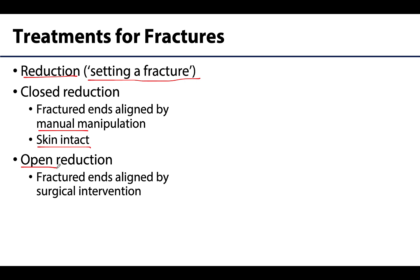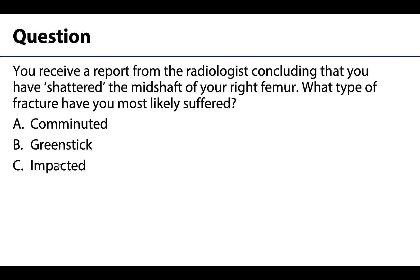That was a lot of fracture content — let's work through a question together. You receive a report from the radiologist concluding that you have a shattered midshaft of your right femur. What type of fracture have you most likely suffered? Is it A) comminuted, B) greenstick, or C) impacted? The main clue in this question is the word 'shattered,' and hopefully that leads you toward A — comminuted — which is the correct answer.